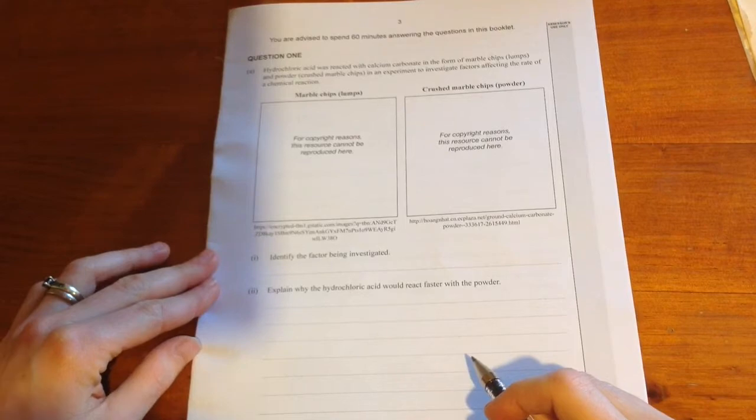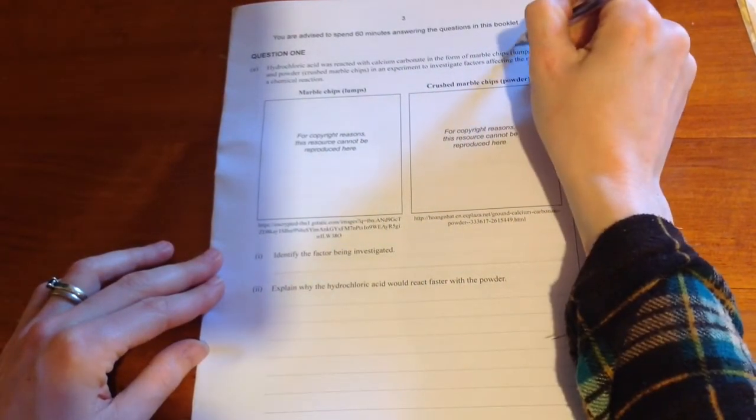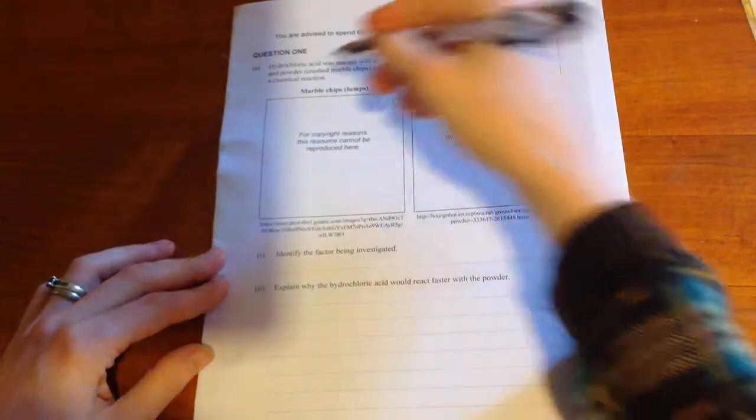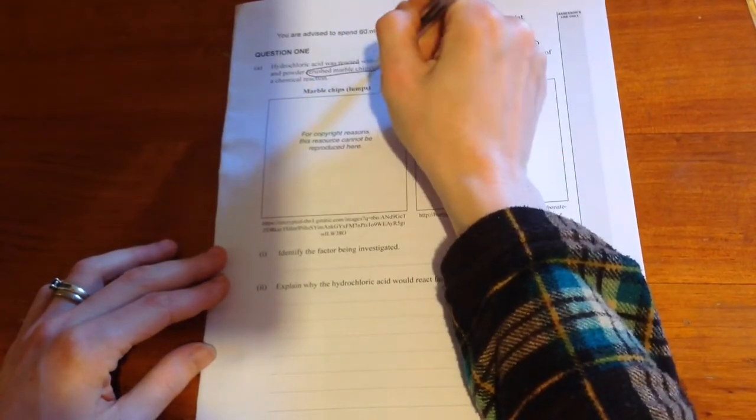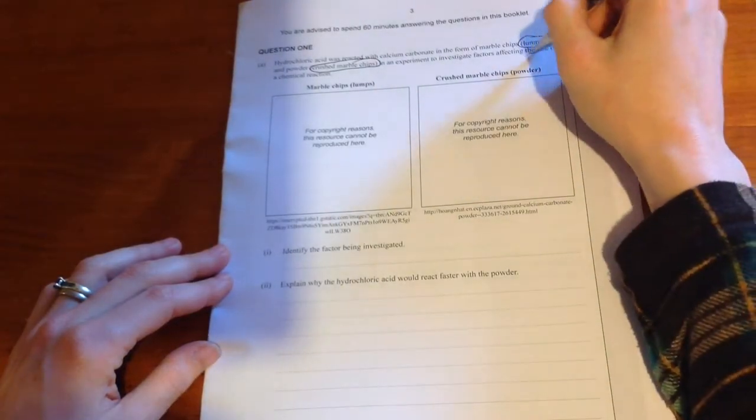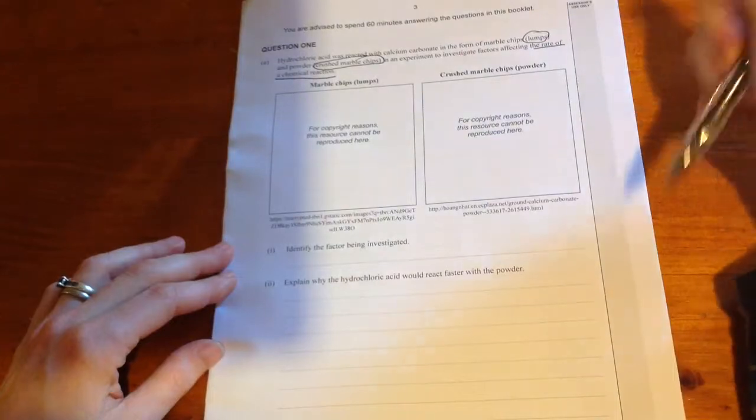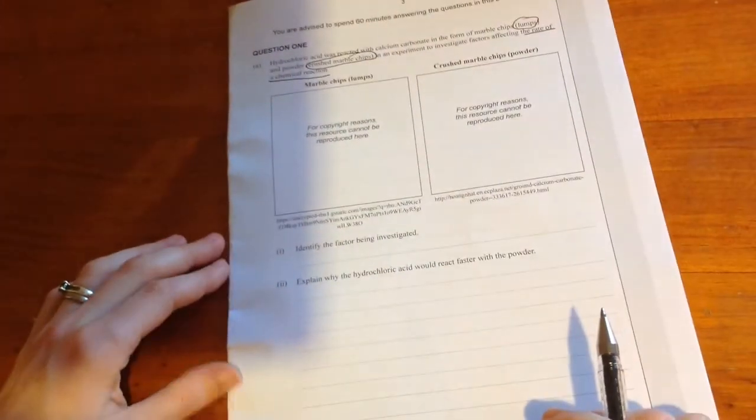Hydrochloric acid was reacted with calcium carbonate in the form of marble chips, lumps, and powder, crushed marble chips, in an experiment to investigate factors affecting the rate of a chemical reaction. Some pictures here, we don't need to see them.